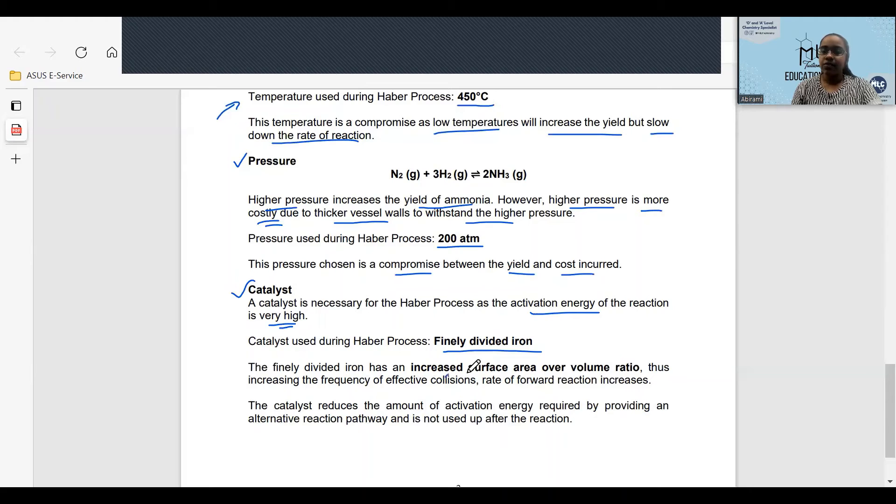The finely divided iron has an increased surface area over volume ratio, thus increasing the frequency of effective collisions and the rate of the forward reaction. The catalyst reduces the amount of activation energy required by providing an alternative reaction pathway and is not used up after the reaction.